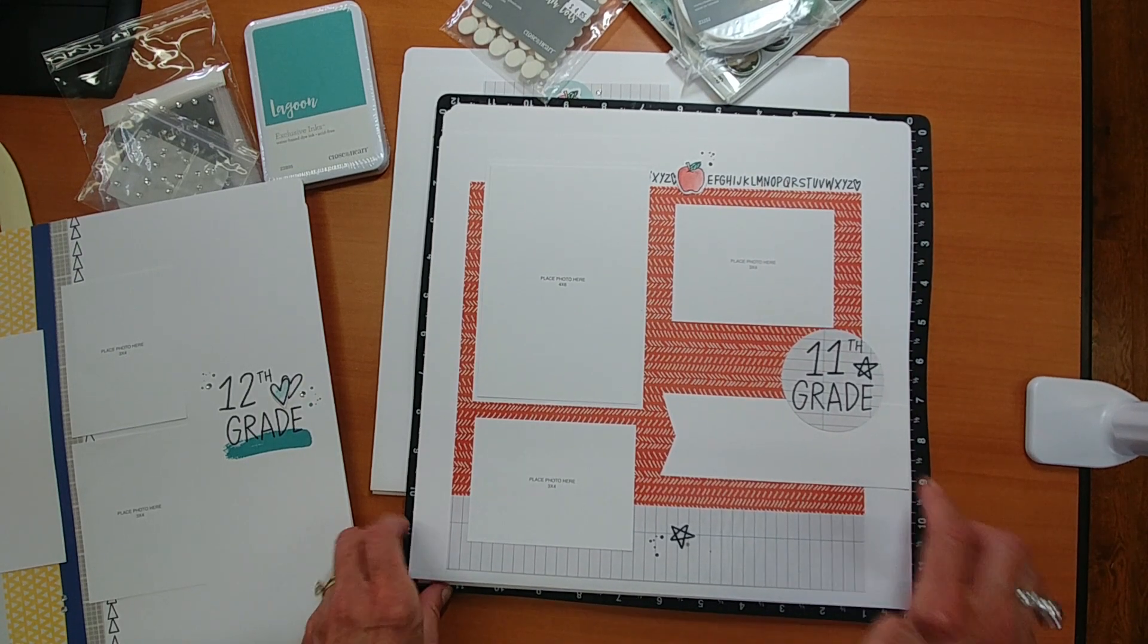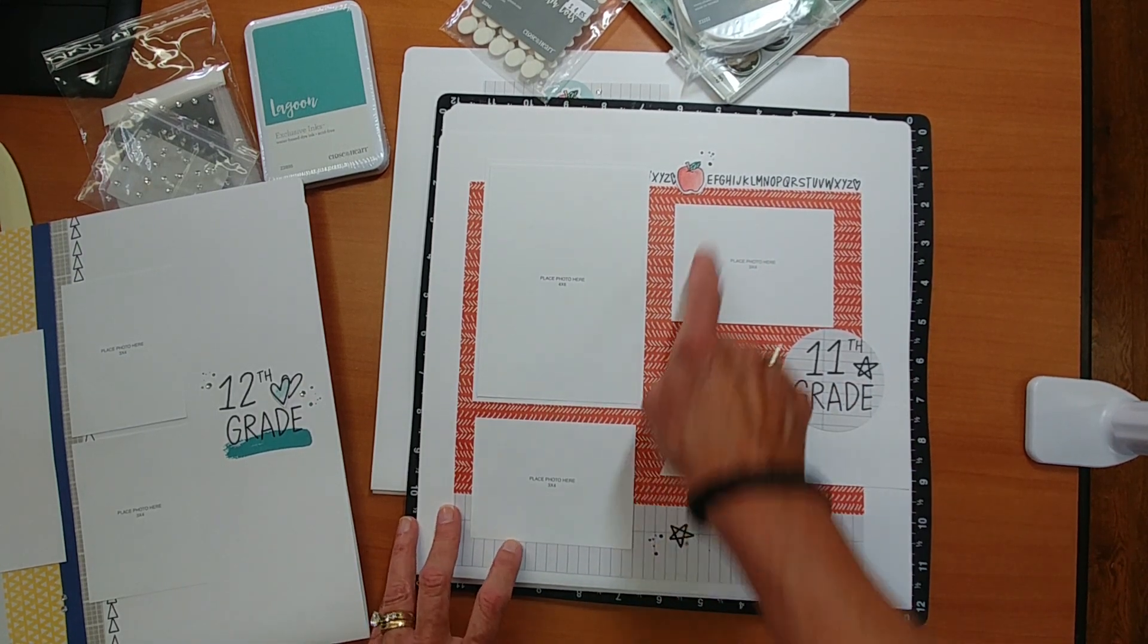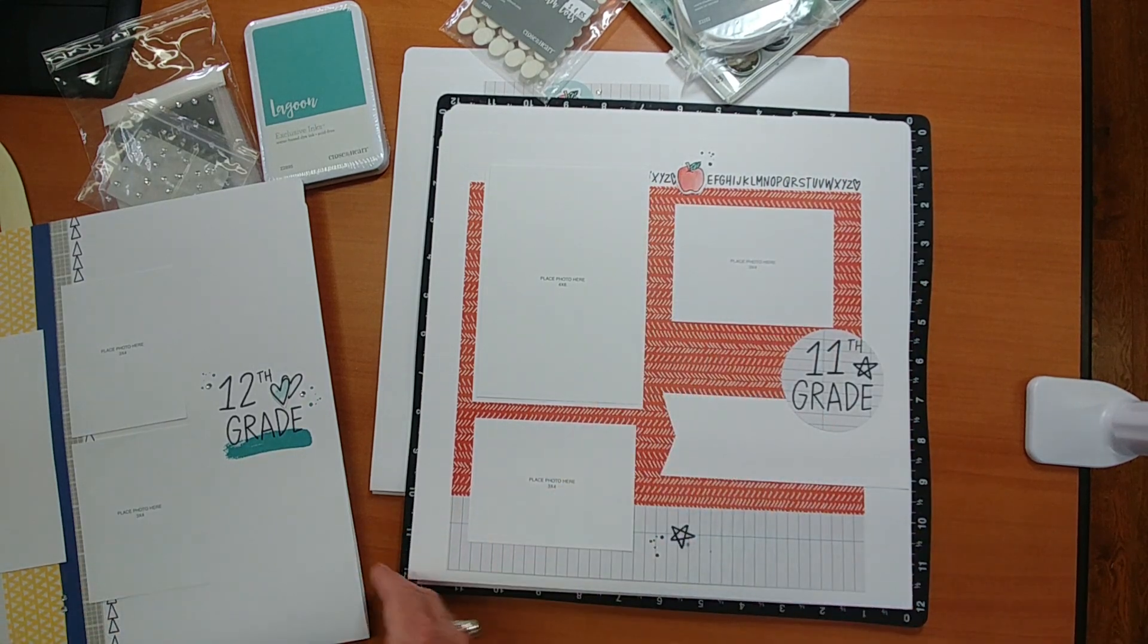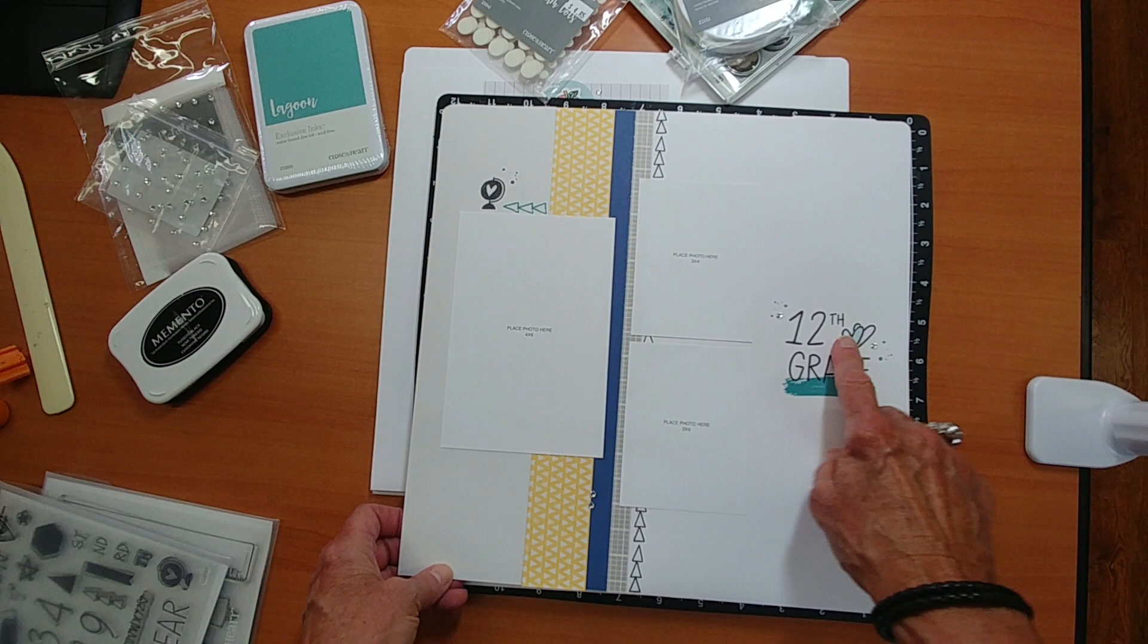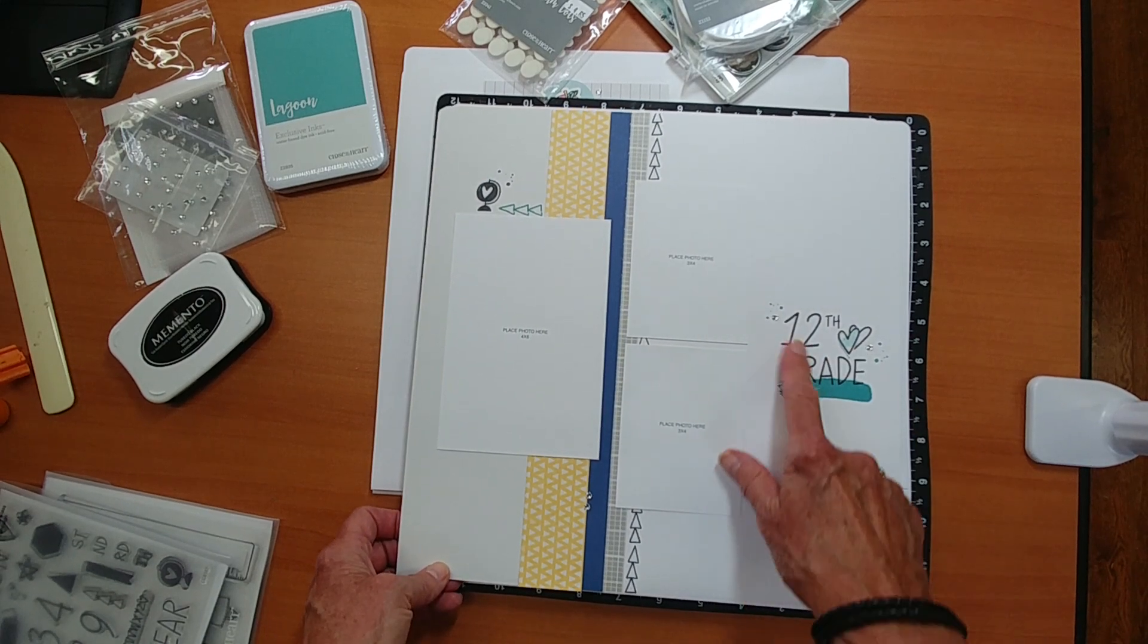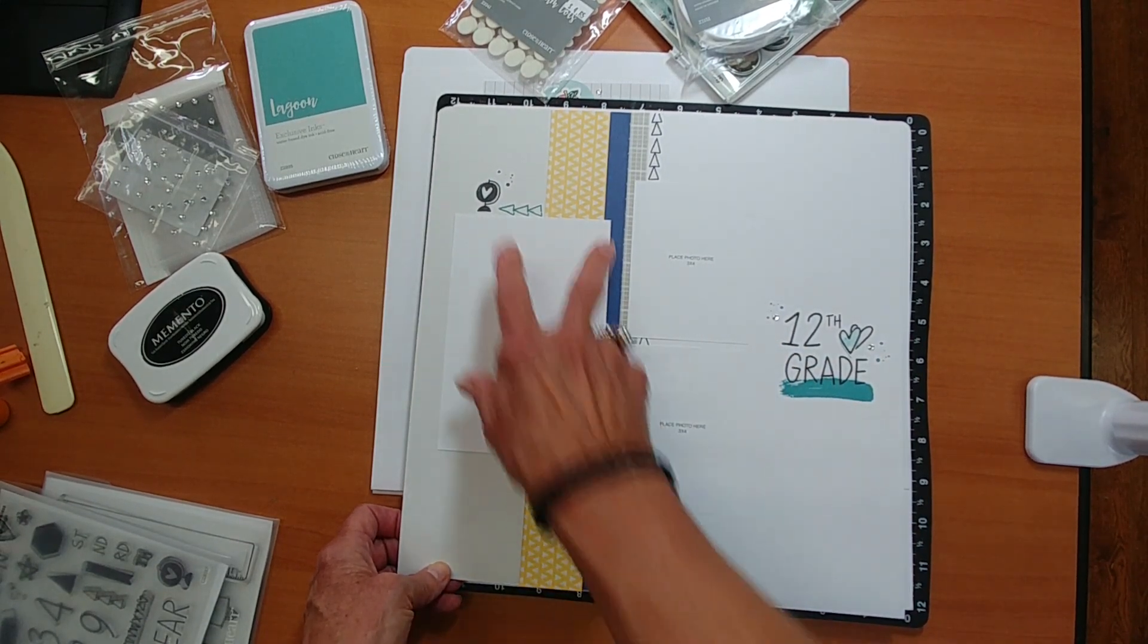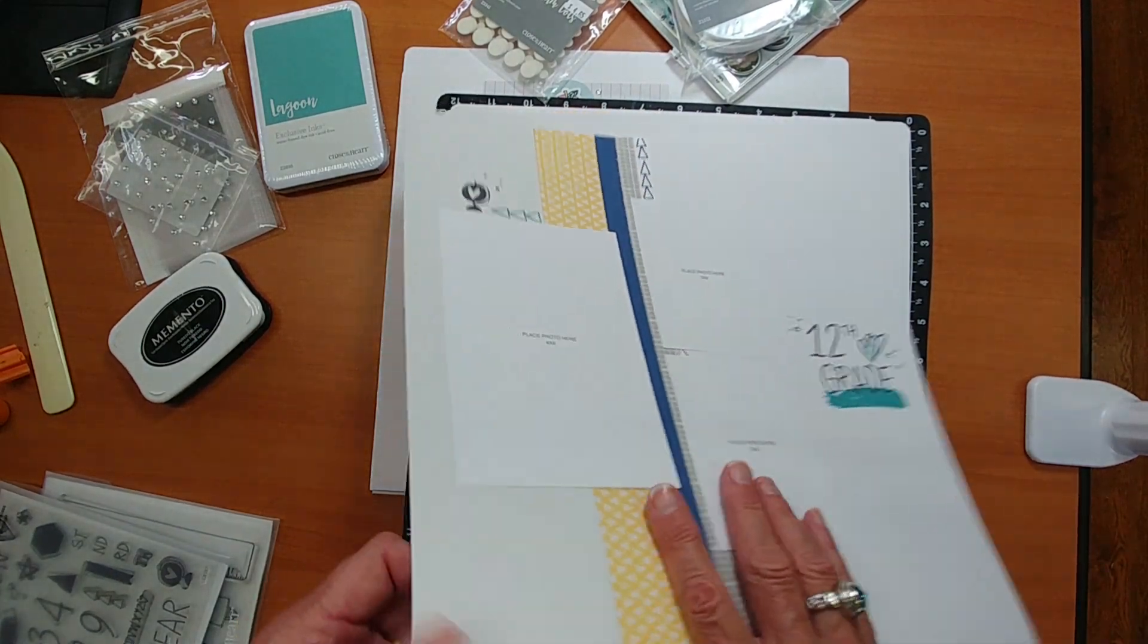And there's the 11th grade. So this is stamped. This is stamped. Up here is stamped. I popped up the apple. I like to add a little extra. I did 2 hearts. I popped one up here. And you'll see here's your paper. This is stamped here. So it's really cute.